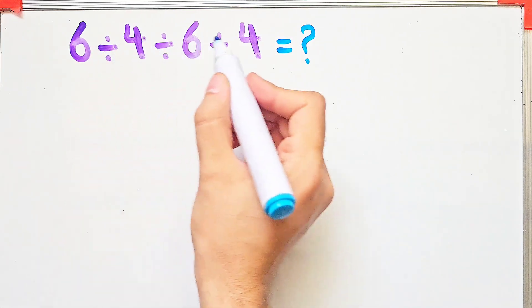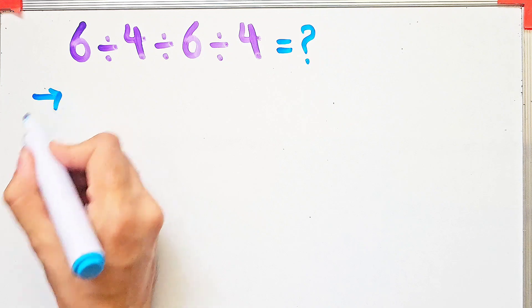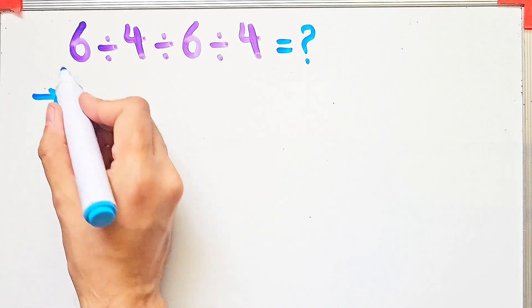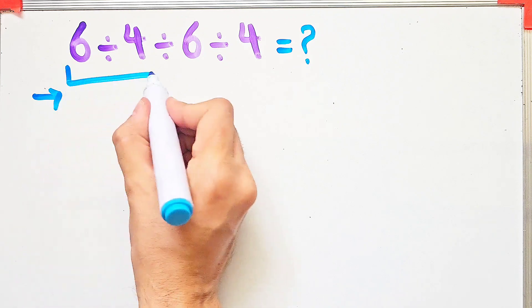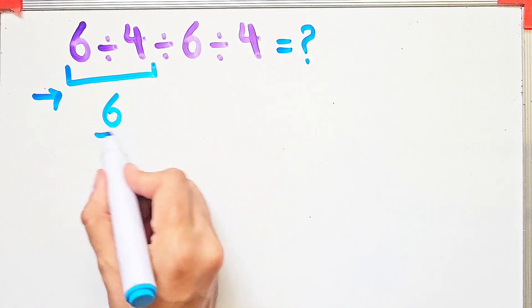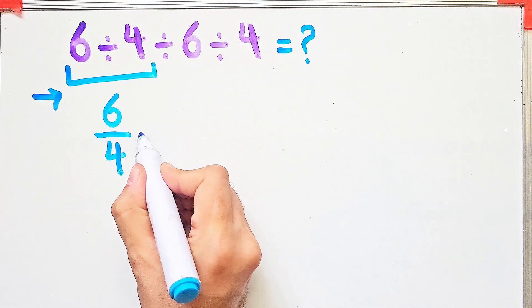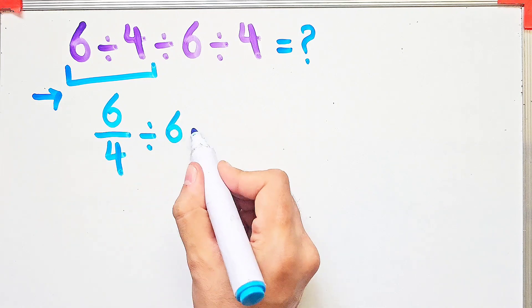Because we have three divisions, we start from the left and simplify. We have six over four, divided by six, then divided by four.